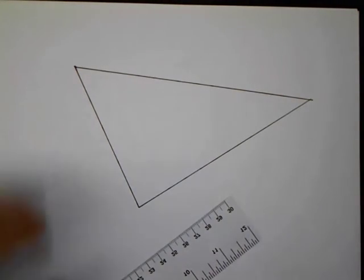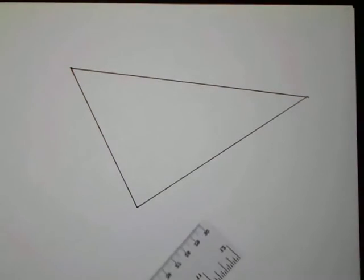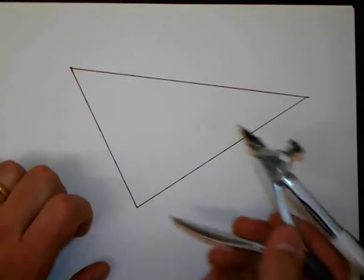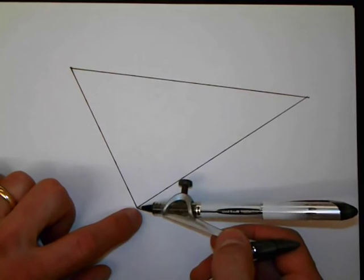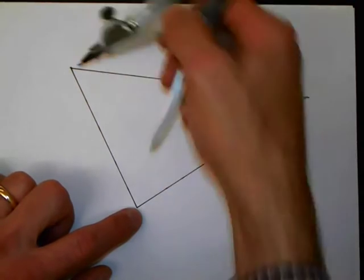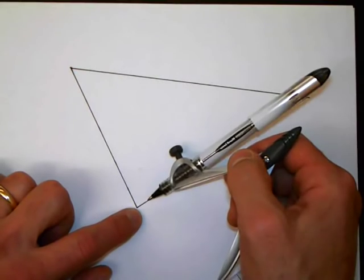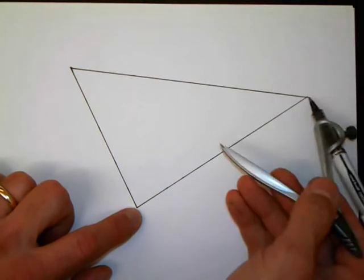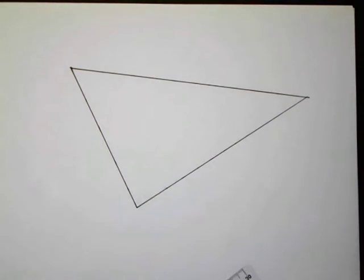So what we're going to do in this construction is find the three altitudes of this triangle. I want the line segment that goes from this vertex to the opposite side, perpendicular to it, from this vertex to its opposite side perpendicular, and this vertex to its opposite side, also perpendicular.